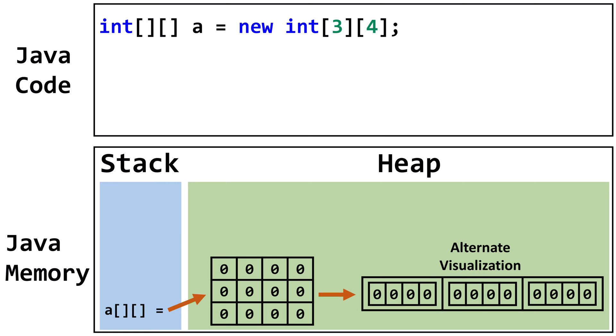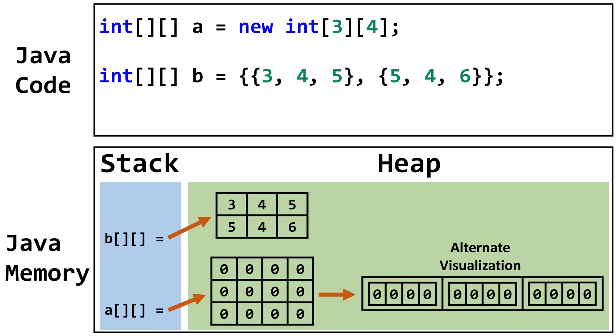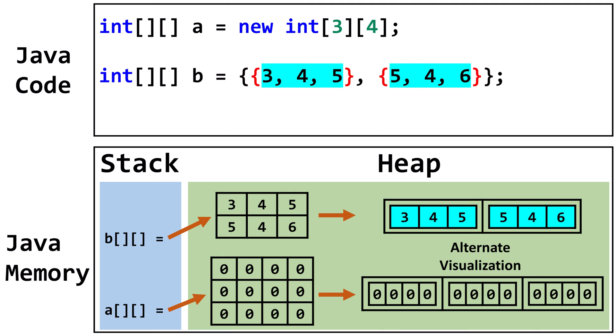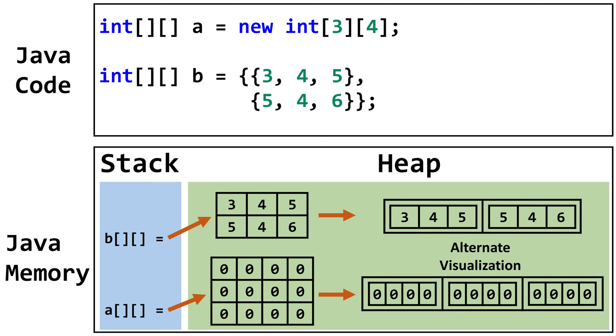Now let's look at another way to create a two-dimensional array. Here, we hard-code specific values into the array. Let's look at an alternative visualization. The outer one-dimensional array contains two objects for its two indexes. Each of these objects is a one-dimensional array of size 3. Since we primarily use the first visualization, I prefer to code each of the inner arrays on its own line.